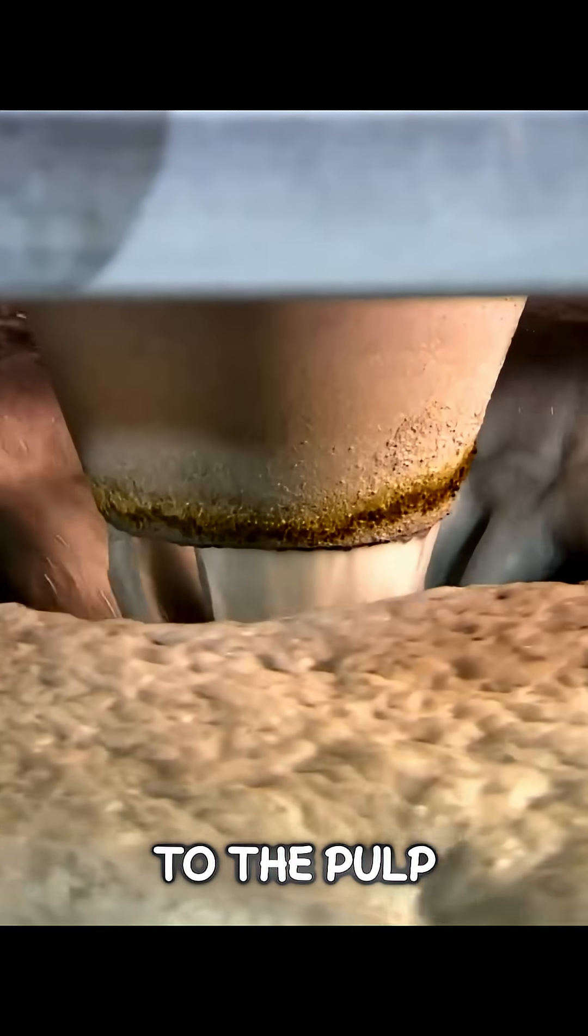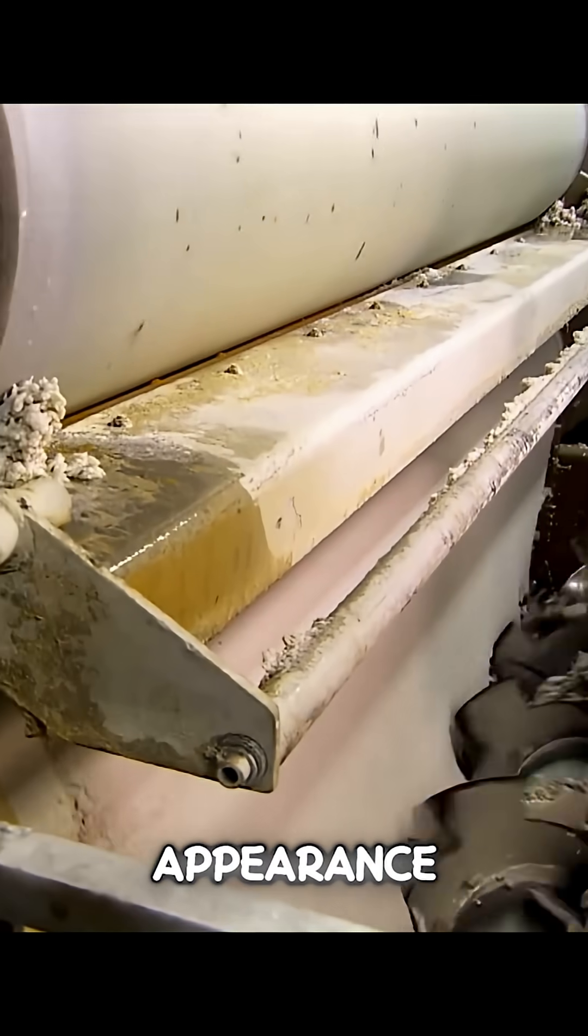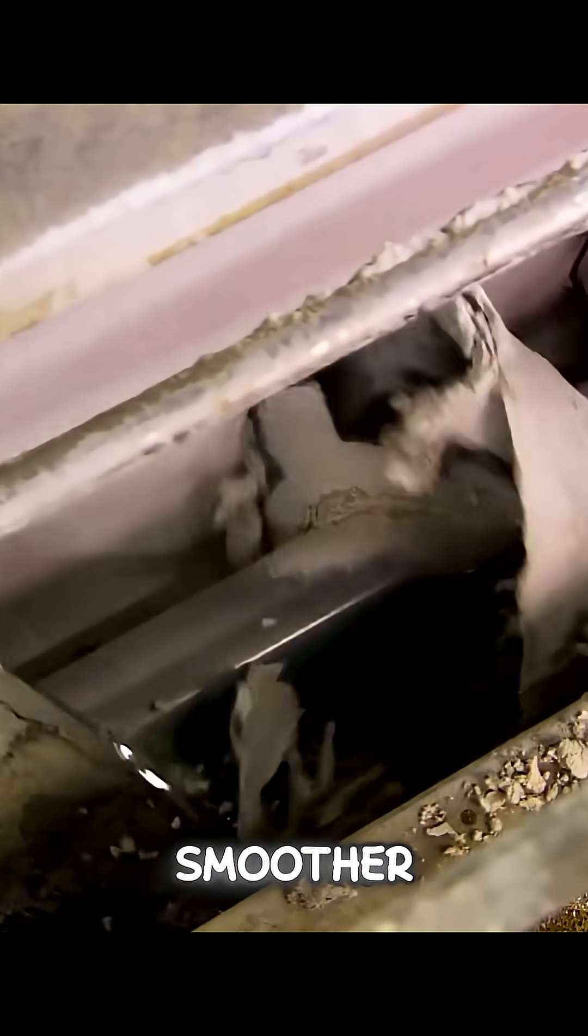Then, air is injected into the pulp, which completely removes the ink and dirt, giving it a clean, paper-like appearance. The material is cut again to make it smoother, and then it's dried by passing through multiple rollers.